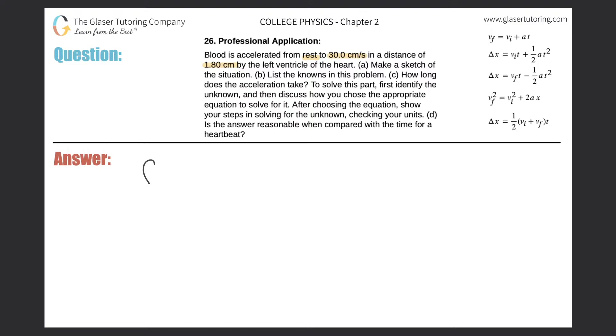So here's the beautiful heart, and blood will be accelerated from rest. The initial point will be at rest, so the initial velocity here would be 0 centimeters per second. It says that it moves a distance of 1.8 centimeters, so this distance here will be 1.80 centimeters.